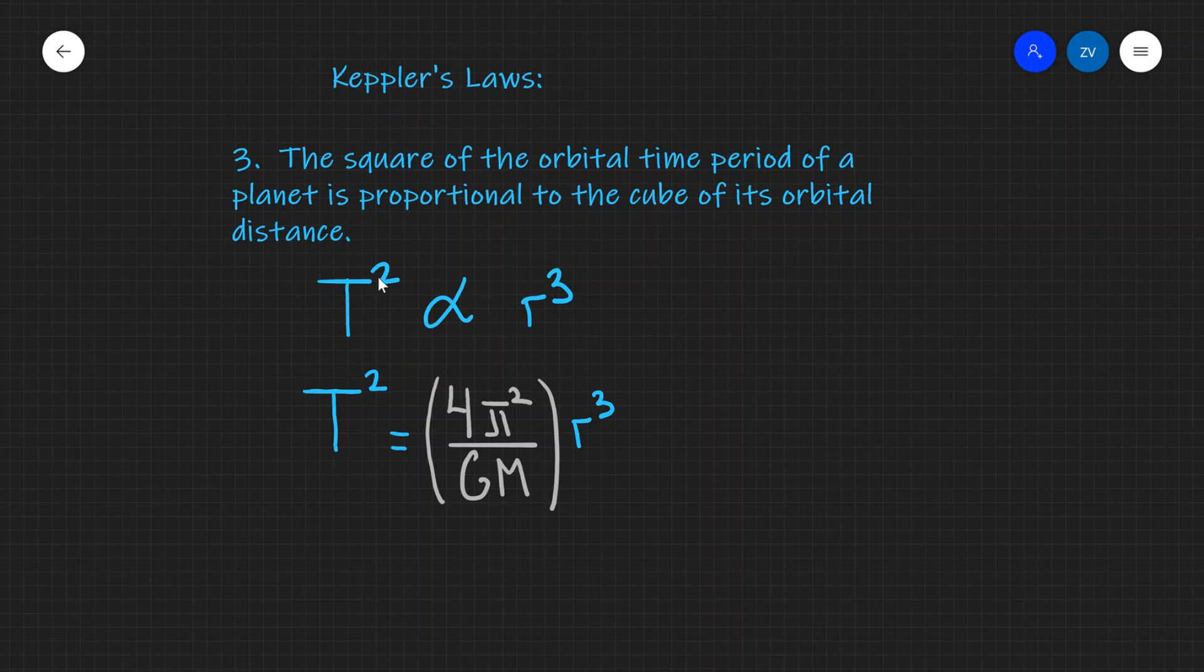If this question appears in an exam paper, something which is really important, and I'm just going to underline this, is that you need to be quite specific and write down the square of the orbital time period of a planet.